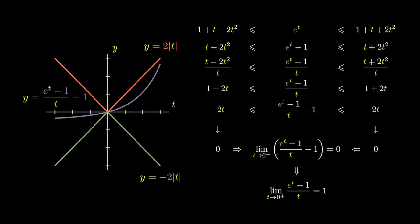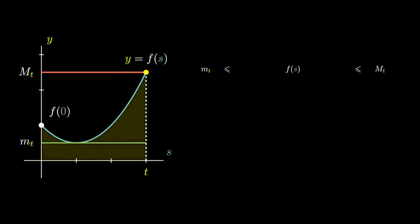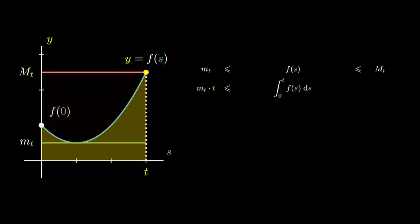For the third limit, consider the graph of f with y-intercept f(0). We notice that f(s) is bounded by the minimum m(t) and the maximum capital M(t). This allows us to calculate its area by taking the integral from 0 to t. This area is larger than the small rectangle. It is not larger than the large rectangle.